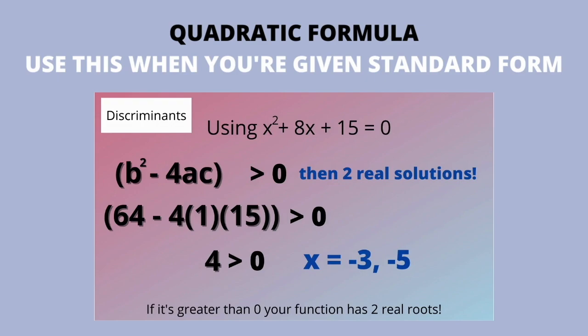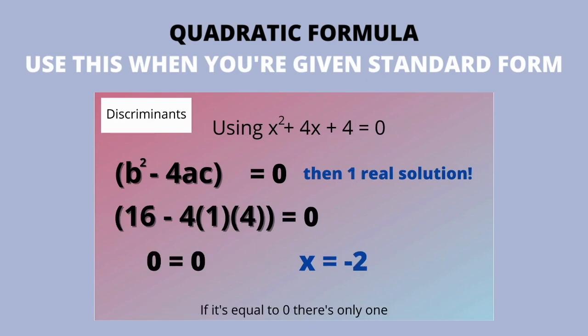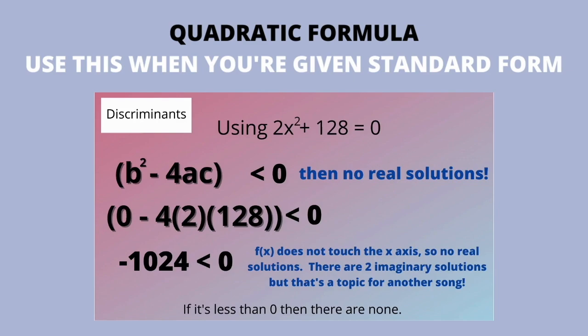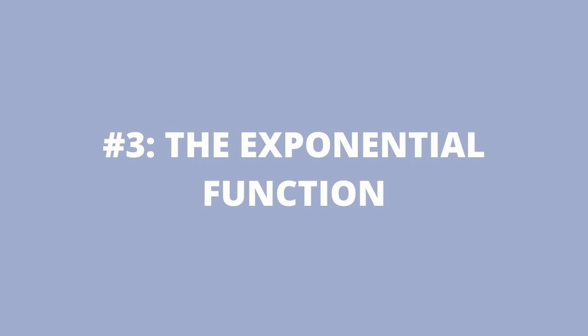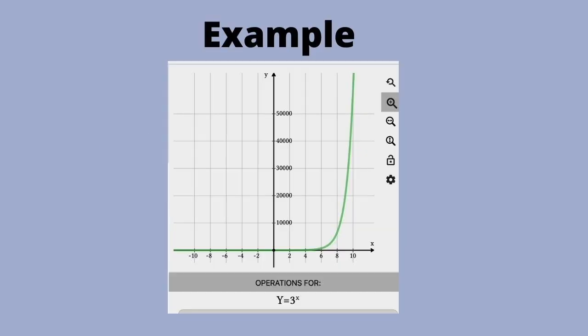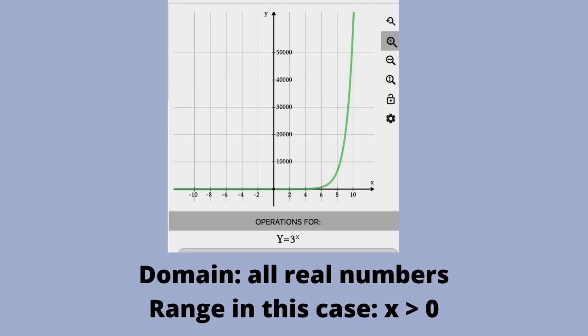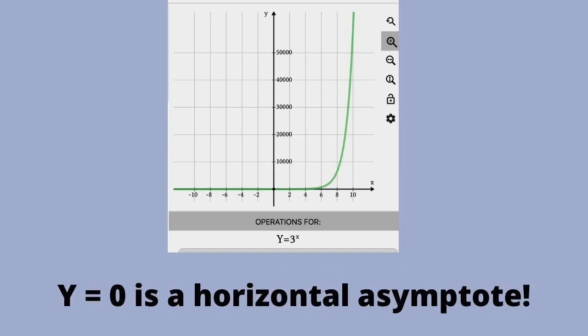The last type of function I'm covering is the exponential function. What's different is you have some number as the base and x is your exponent. The domain of an exponential function is all real numbers, but notice the range is not. In this example, y is slowly approaching zero but never reaches zero.